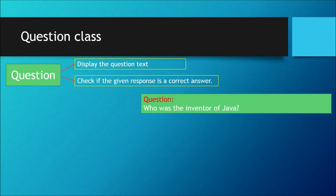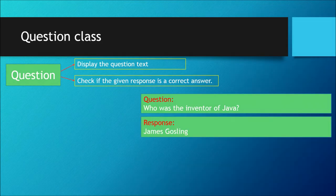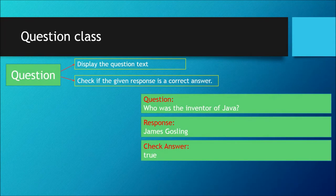For example, the question is 'Who was the inventor of Java?' and the correct answer is James Gosling. We can get a response from the user, and it's going to check to see if the answer is correct or not. Once we check the answer, it will return true or false.